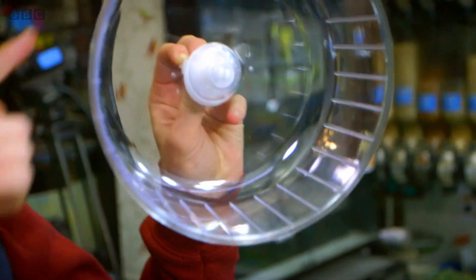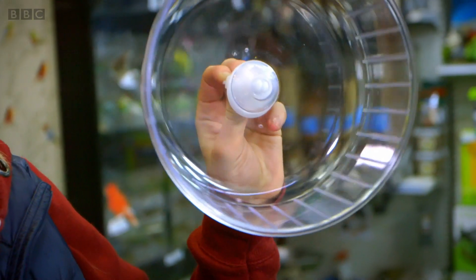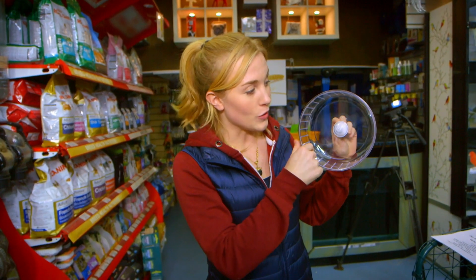This is a wheel just like the one in Herbert and Helena's cage. This bit inside is called the running track because that's where a hamster runs.